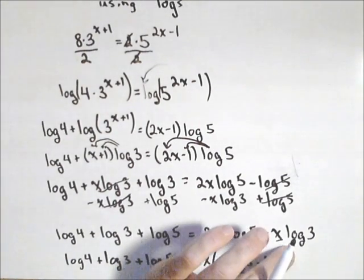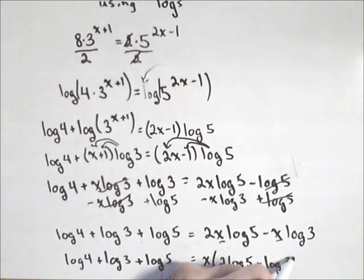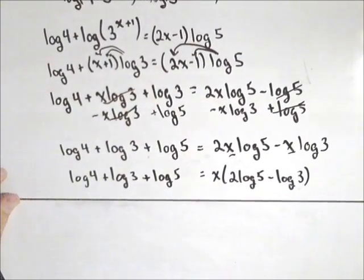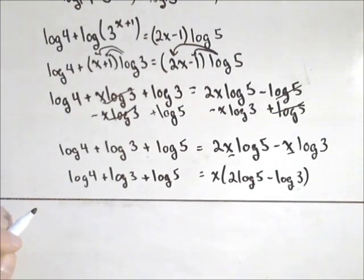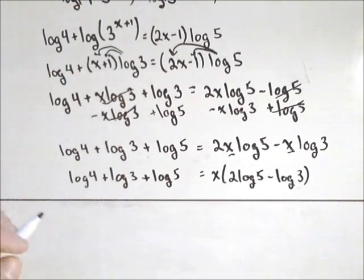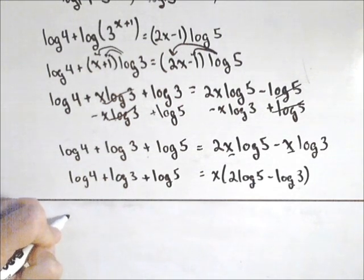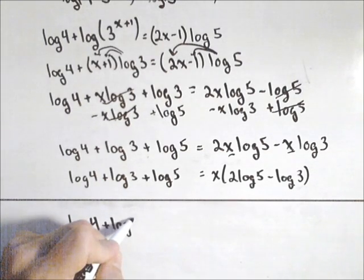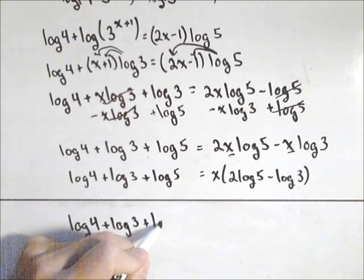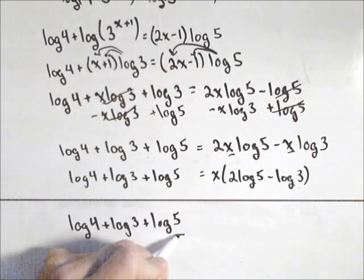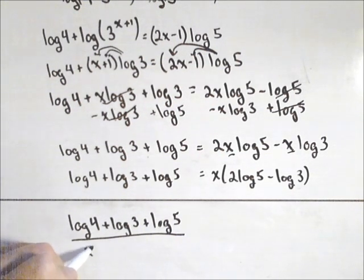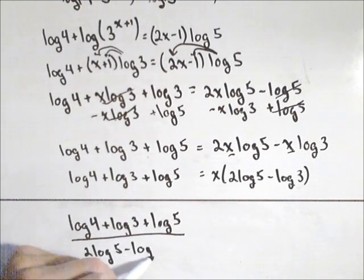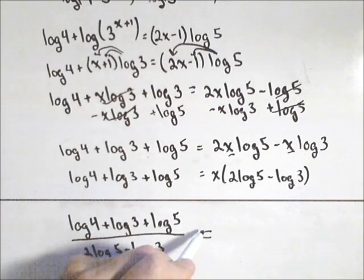Log four plus log three plus log five. All right. Oh, jeez, I forgot to write my three. Okay, so next thing I'm going to do is I'm going to divide. And I'm going to show you a couple different forms we can put this final answer in. It's kind of cool that we can do using properties of logs. So what I have is log of four plus log of three plus log of five over two log of five minus log of three is equal to x.